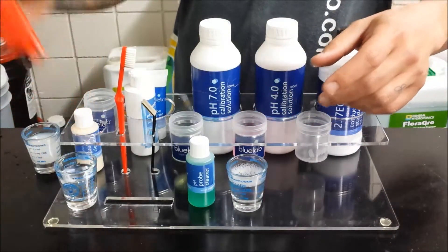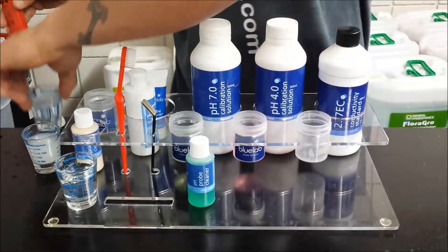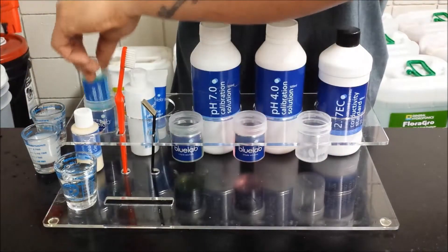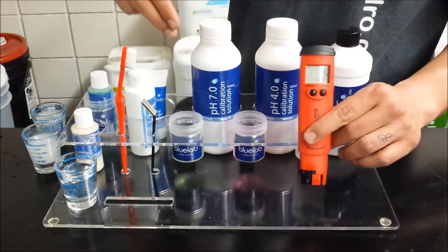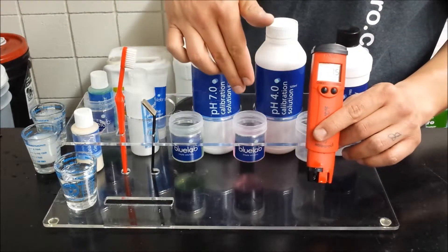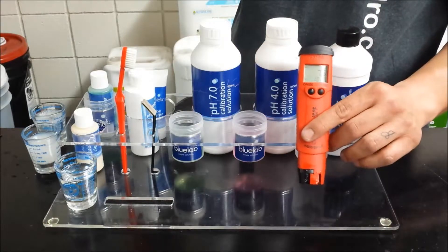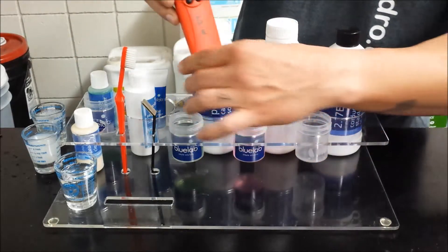Go ahead and rinse it off in some water. Now you're ready to calibrate. You want to start with fresh calibration solution. So we have some 7.0 and 4.0 pH calibration solution here. Start with the 7.0.